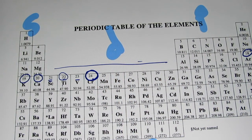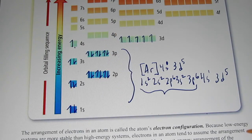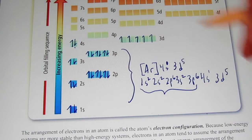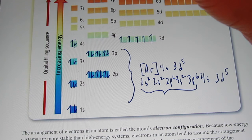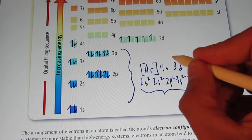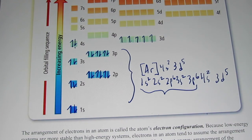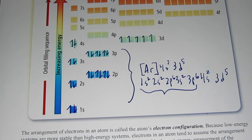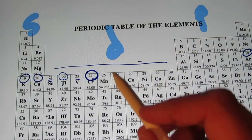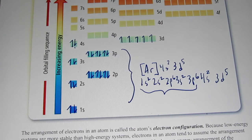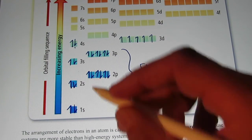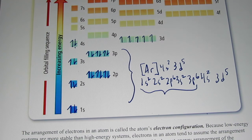With manganese, the next electron would go right there. So we go back to 4s2 3d5 for manganese — atomic number 25, with 25 electrons placed. That's the way they enter into the various sublevels and orbitals.